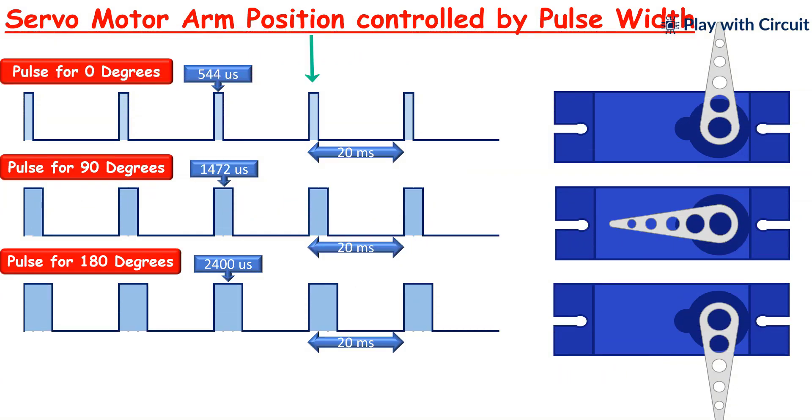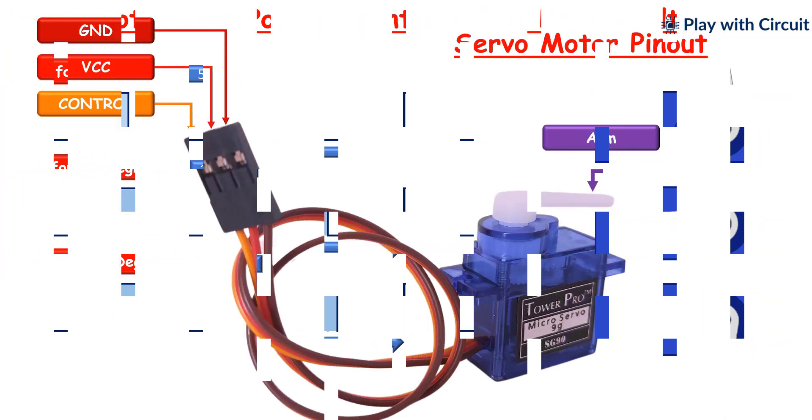A pulse duration of 544 microseconds will rotate the servo to 0 degrees. A pulse duration of 1472 microseconds will rotate the servo to 90 degrees, middle position. A pulse duration of 2400 microseconds will rotate the servo to 180 degrees. This mechanism allows the servo motor to accurately match the input PWM signal, ensuring precise angular position.